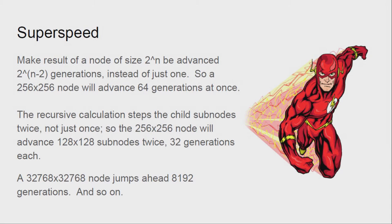This time the higher nodes actually calculate further ahead in time. So we have that 8x8 node and we showed how it calculated one generation forward. Instead of calculating one generation forward, we make that 8x8 node generate two generations forward by recursively calling its children multiple times. And the 256x256 node advances one quarter of that, 64 generations in time. And this continues on up the tree. So a 32kx32k node actually jumps 8k generations ahead at a time.